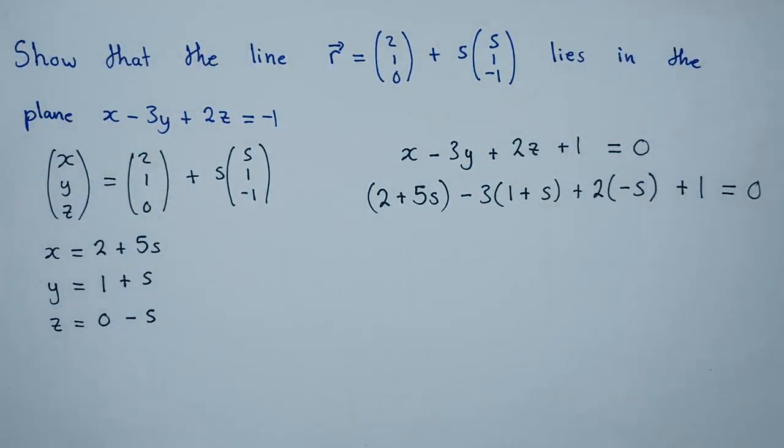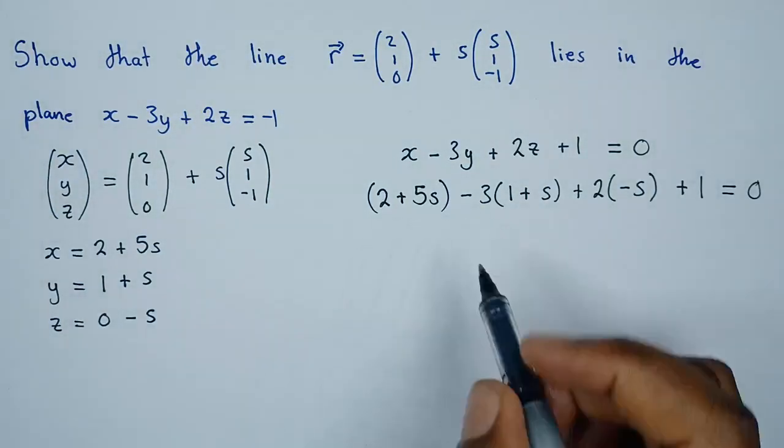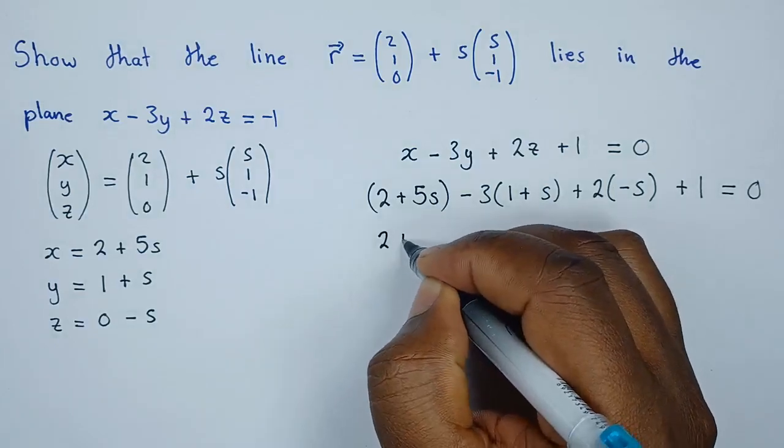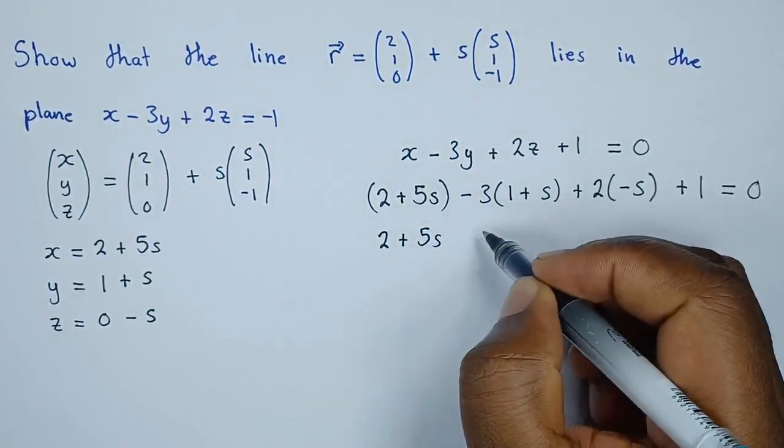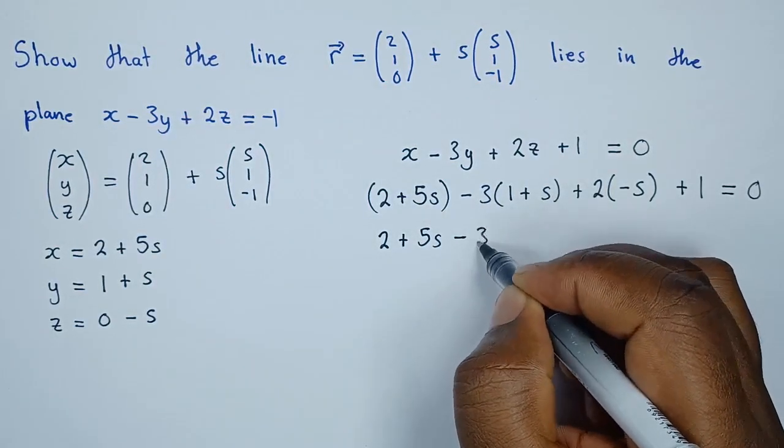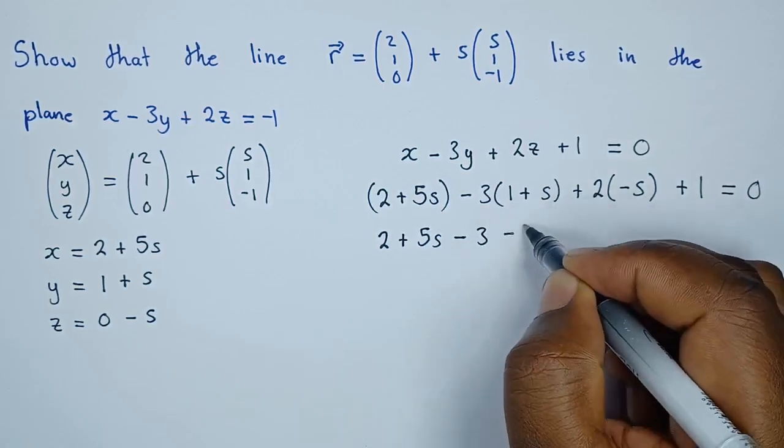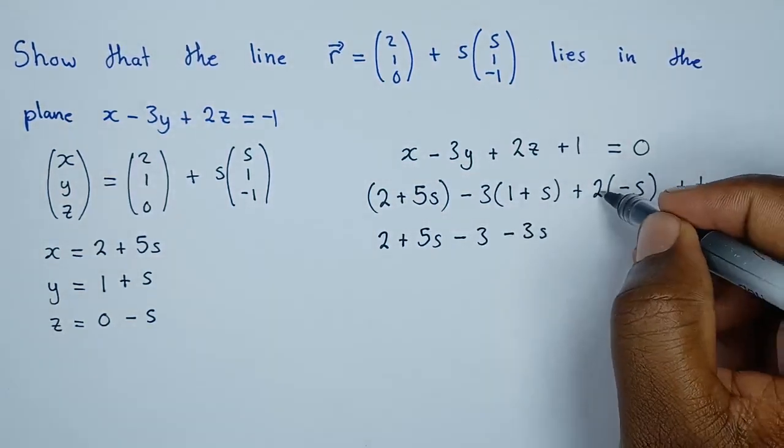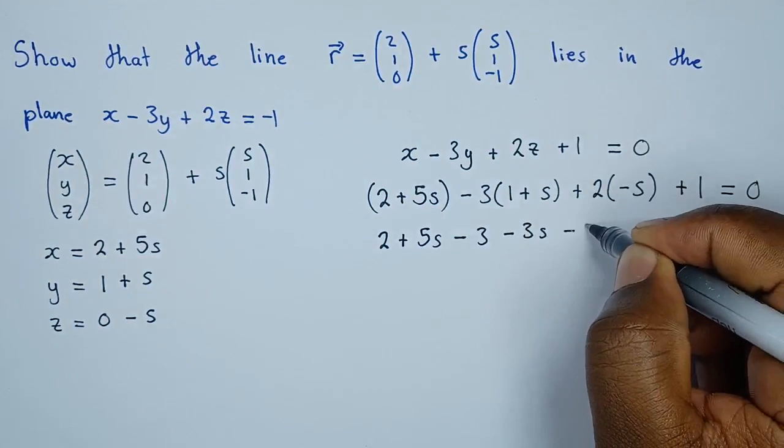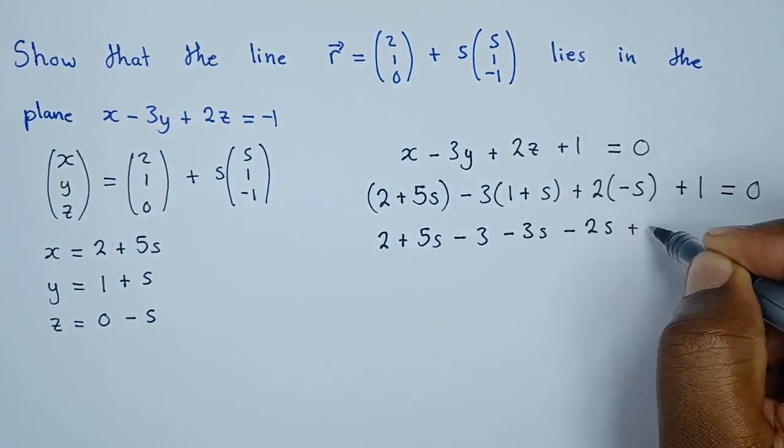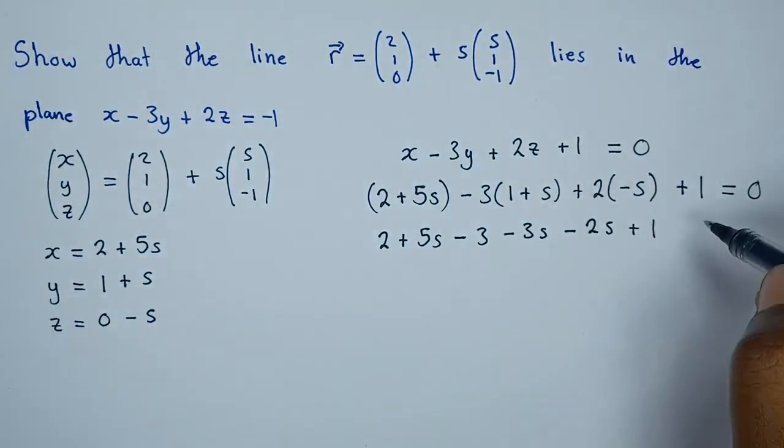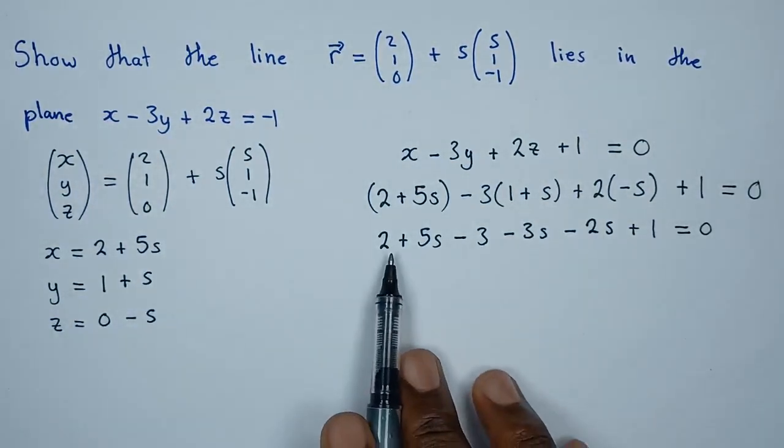Let's prove this. We have (2 plus 5s) minus 3 times (1 plus s), which gives us minus 3 minus 3s, plus 2 times negative s, which is minus 2s, plus 1. Now let's group like terms.